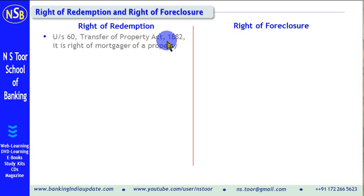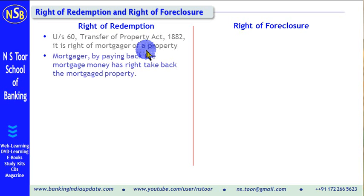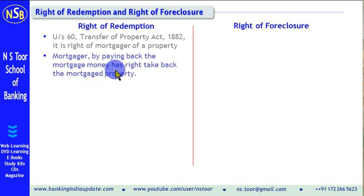Under Section 60 of the Transfer of Property Act, this right is the right of the mortgagor of the property. The owner of the property who mortgages the property in favor of the bank is called the mortgagor. The right of redemption belongs to the mortgagor — that is the borrower. Whenever the borrower makes repayment of the loan, which is called mortgaged money, he has a right to take back the mortgaged property. On repayment of loan, he can take back the property from the bank. This is a right which will cancel the mortgage.